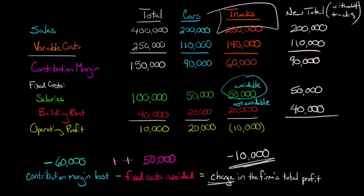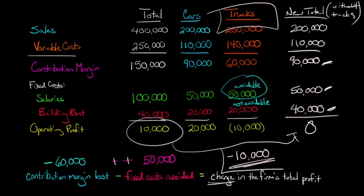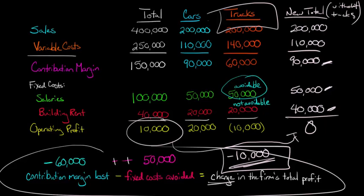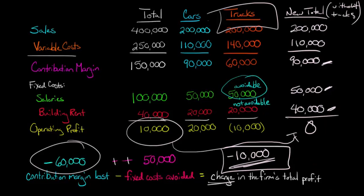So now we say, what is our new profit total? This $90,000 minus $50,000 minus $40,000 gives us a profit total of zero. We went from our total firm profit initially of $10,000 to zero. So that's a decrease of $10,000, which is what we calculated here. We take the contribution margin that we're giving up, $60,000, and account for the benefit that we're avoiding some fixed costs. We net that together, and that tells us the net change in the firm's total profit.